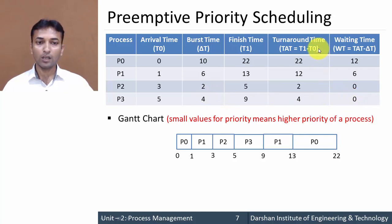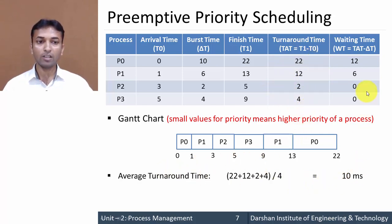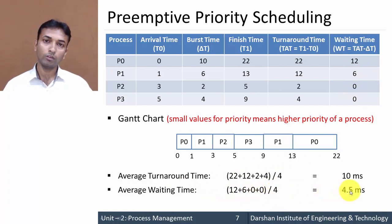Now find the average turnaround time, which is the sum of all turnaround time values divided by the number of processes, that is ten milliseconds. The average waiting time is the sum of all waiting time values divided by the number of processes, that is four point five milliseconds.